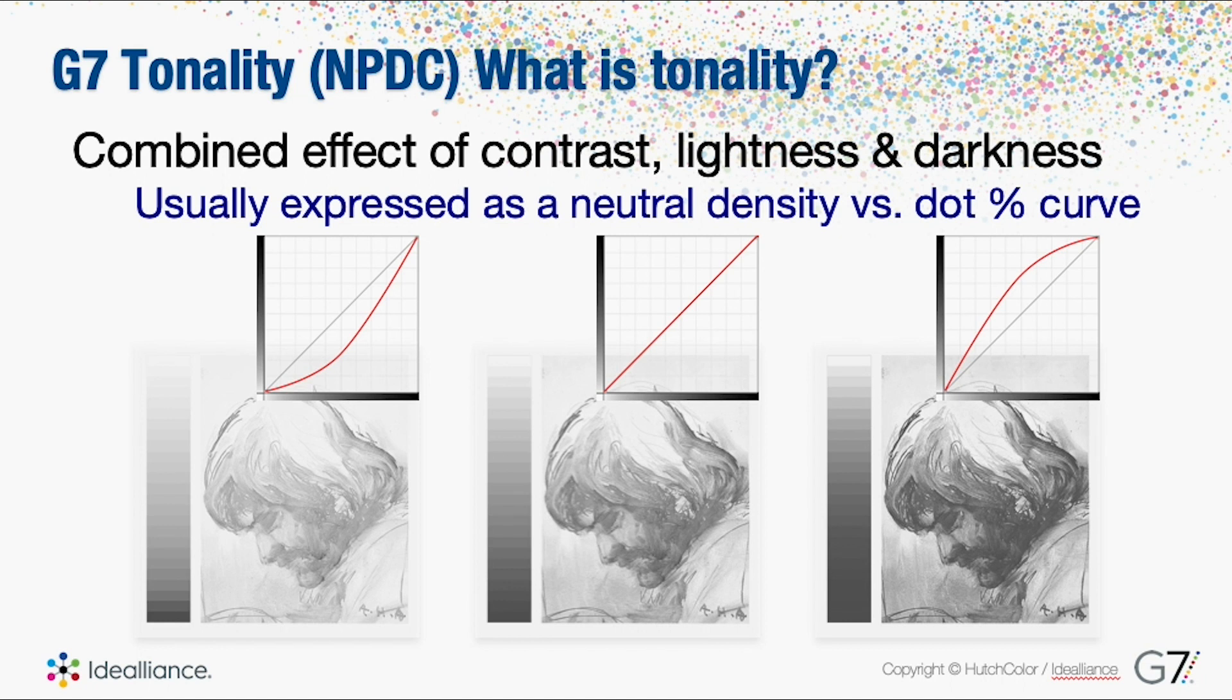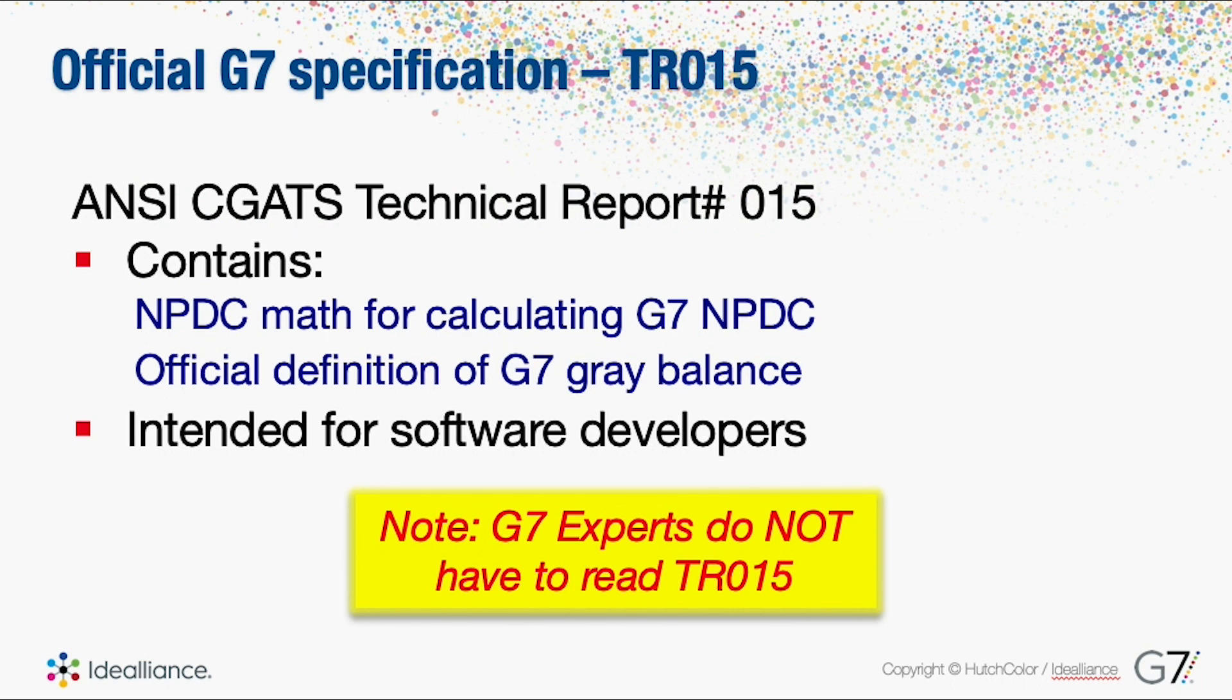It's also defined in a technical report from ANSI CGATS, and in this technical report it explains the complicated math for calculating G7 neutral print density curves and it also defines the official definition of G7 gray balance. You can see here it's intended for software developers and not even G7 experts have to read TR015.